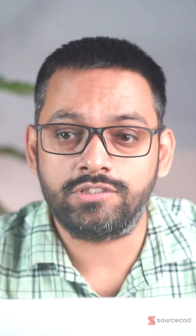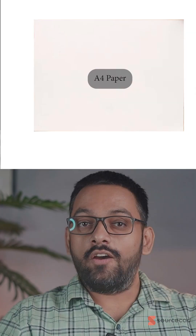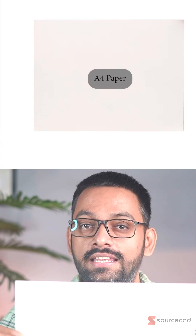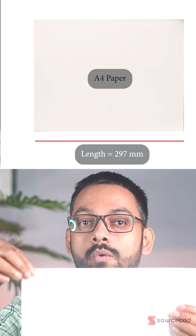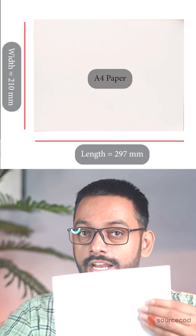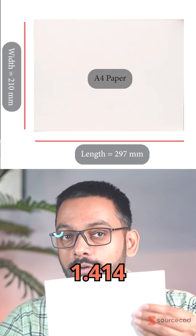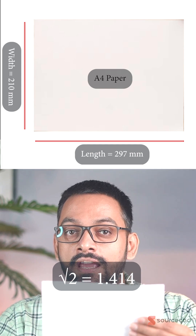This is an A4 size paper and it has a really deep connection with the square root of 2. If you divide the length of this ISO paper by its width you'll get 1.414, which is basically the square root of 2.